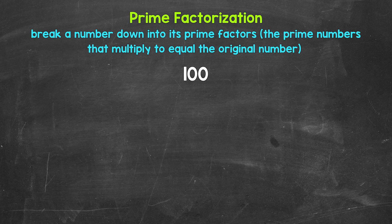We are breaking 100 down into its prime factors — the prime numbers that multiply to equal 100. Looking at 100, we need to start breaking this down by thinking of two factors, two numbers that multiply to give us 100. Well, 2 and 50 are factors of 100. 2 times 50 equals 100, so let's break 100 down into 2 and 50.